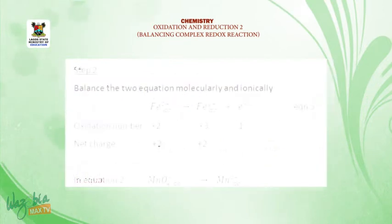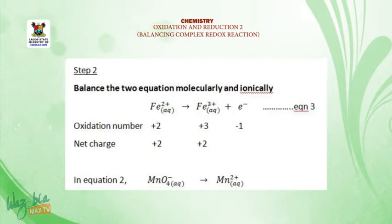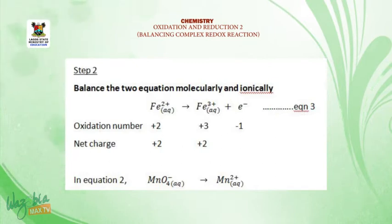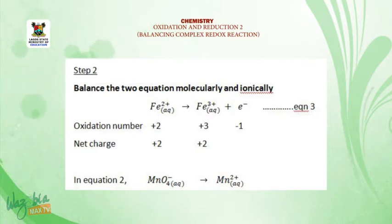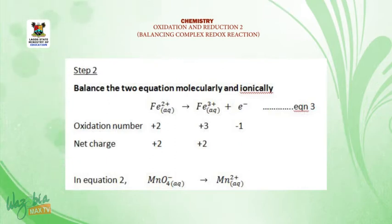Step 2: balance the two equations molecularly and ionically. For Fe²⁺ → Fe³⁺, we have one atom on each side. The oxidation number is +2 for Fe²⁺ and +3 for Fe³⁺. So we need to add one electron (e⁻) to balance it, so that the net charge is +2 on the reactant side and +2 on the product side.